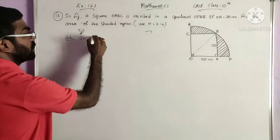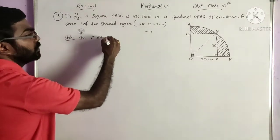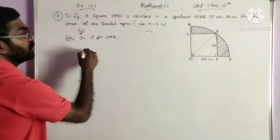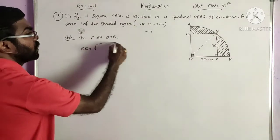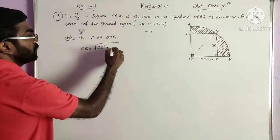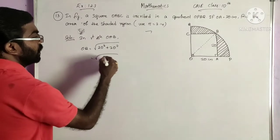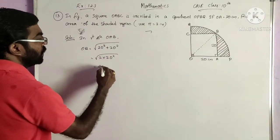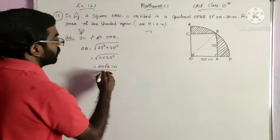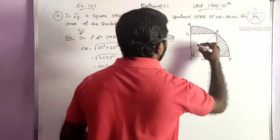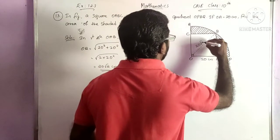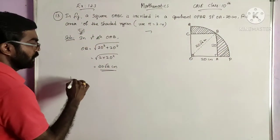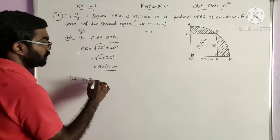In right triangle OAB, OB equals square root of 20 square plus 20 square, which equals 20 root 2 cm. So this is the radius R equal to 20 root 2.